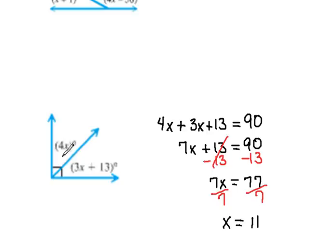This first angle is 4 times x. So if we know that x is 11, then we would have to replace the x with 11. So we know that angle is actually 44 degrees.